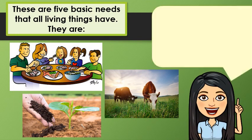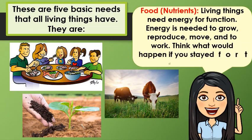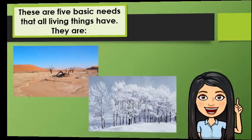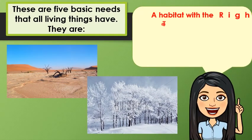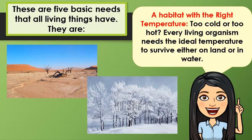Next, we have food or nutrients. Living things need energy to function. Energy is needed to grow, reproduce, move, and to work. Think about what would happen if you stayed for 3 days without food. The fifth need is a habitat with the right temperature. Every living organism needs the ideal temperature to survive, either on land or in water.